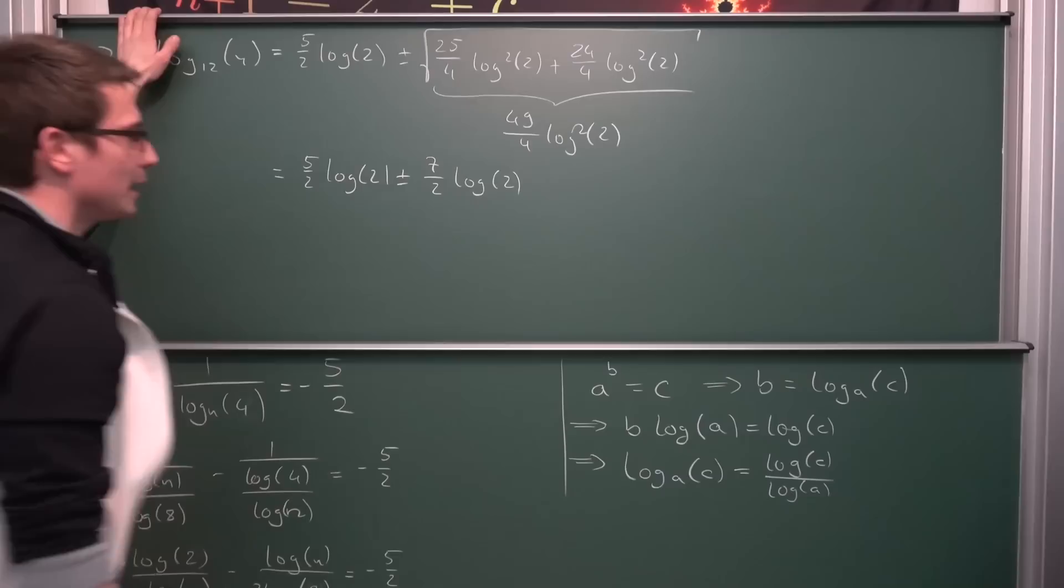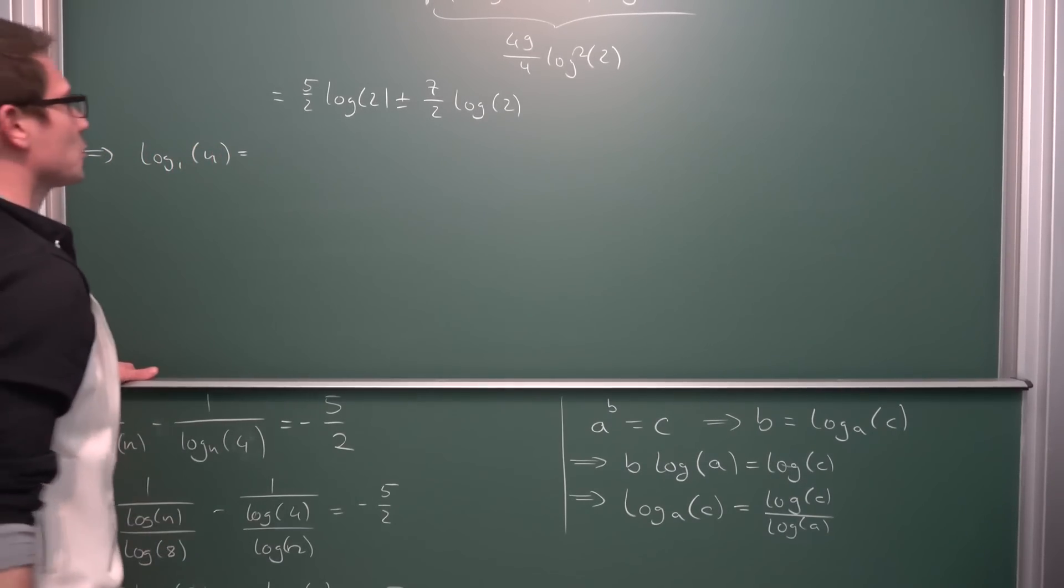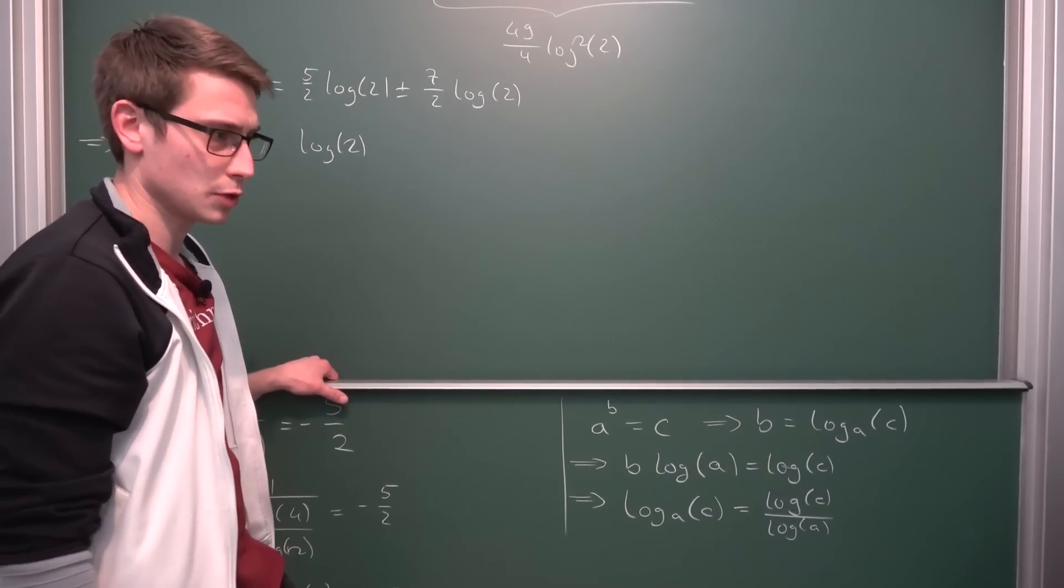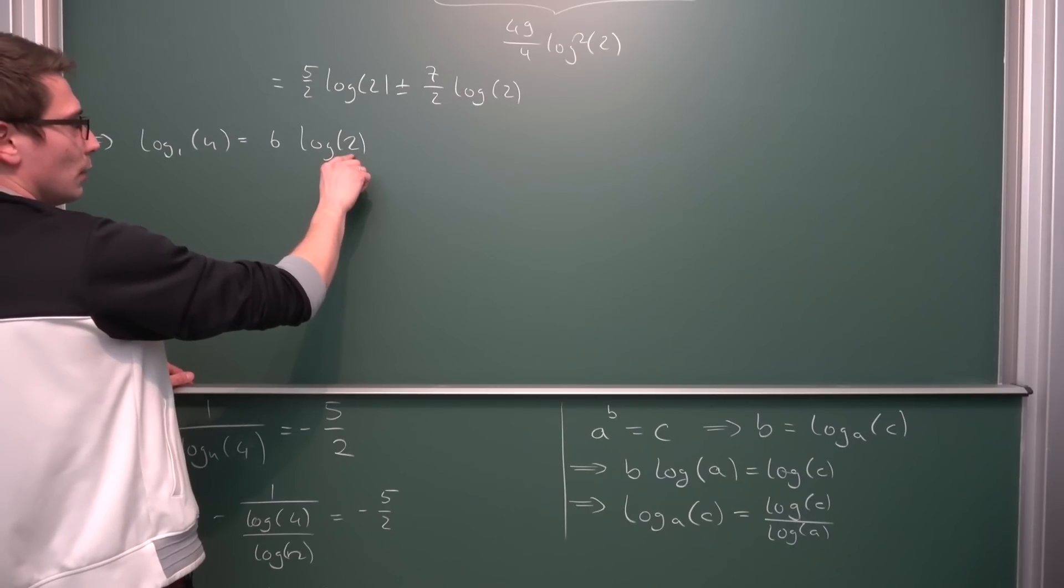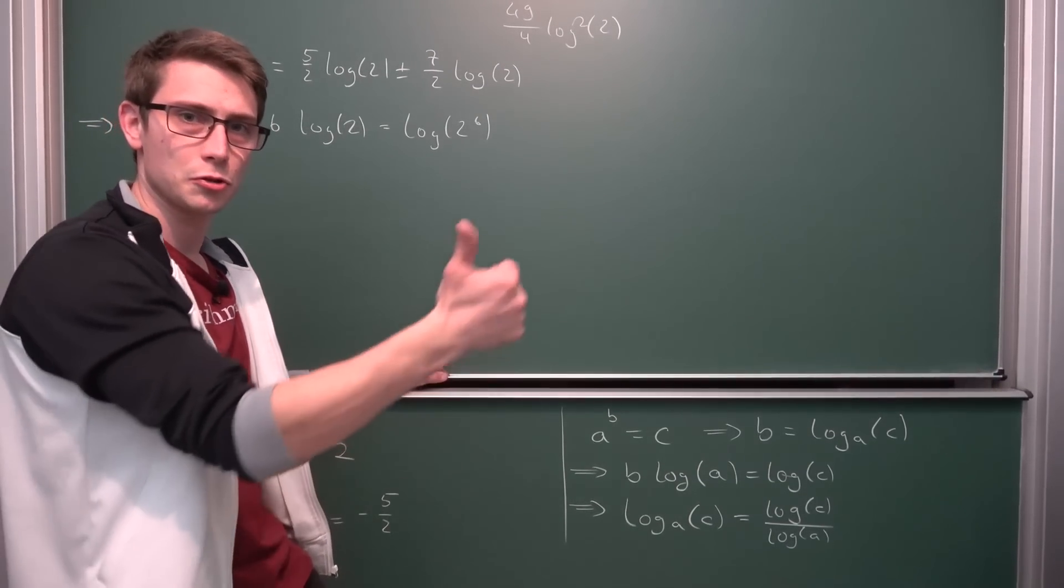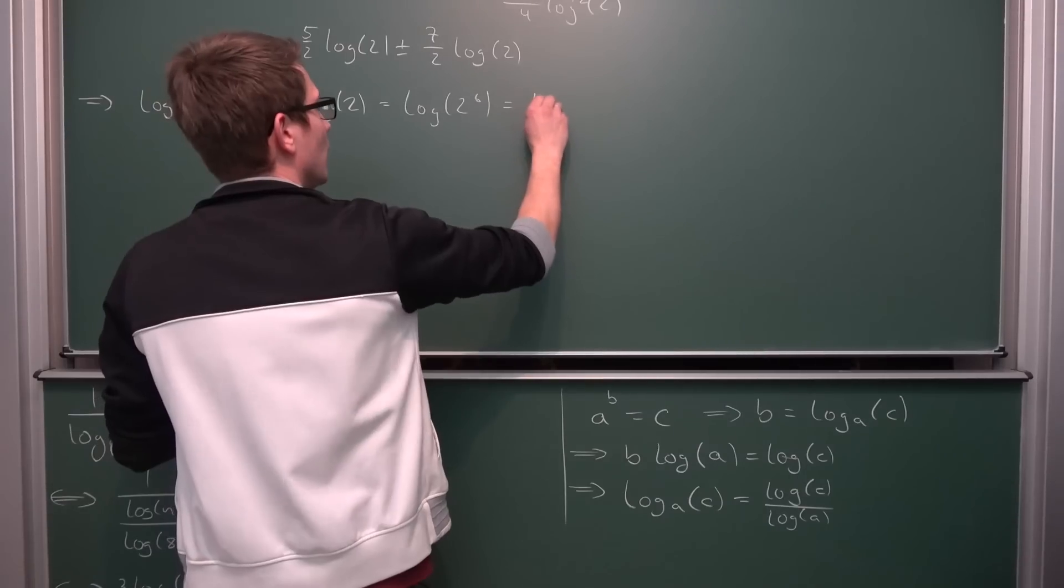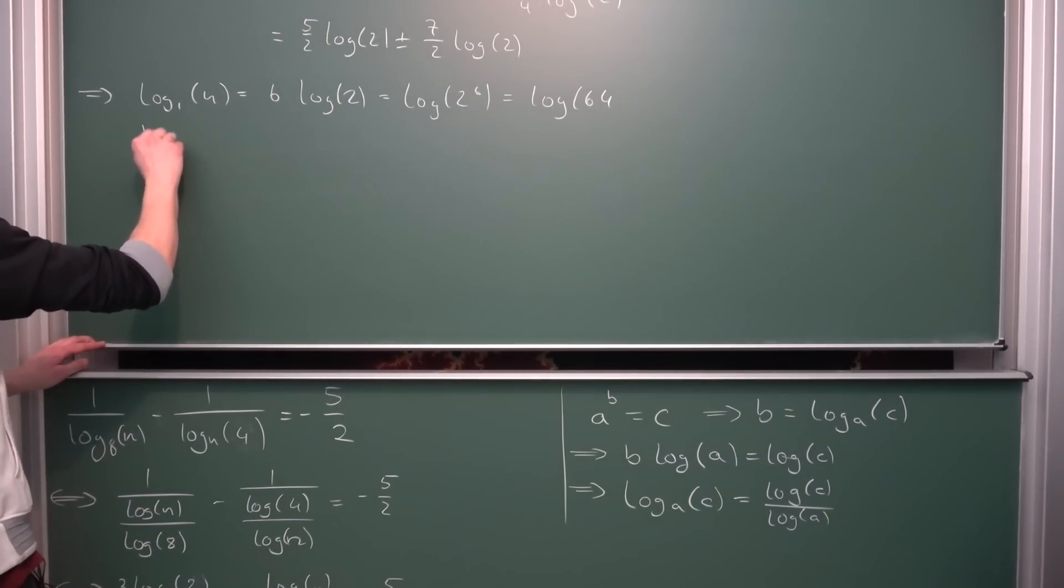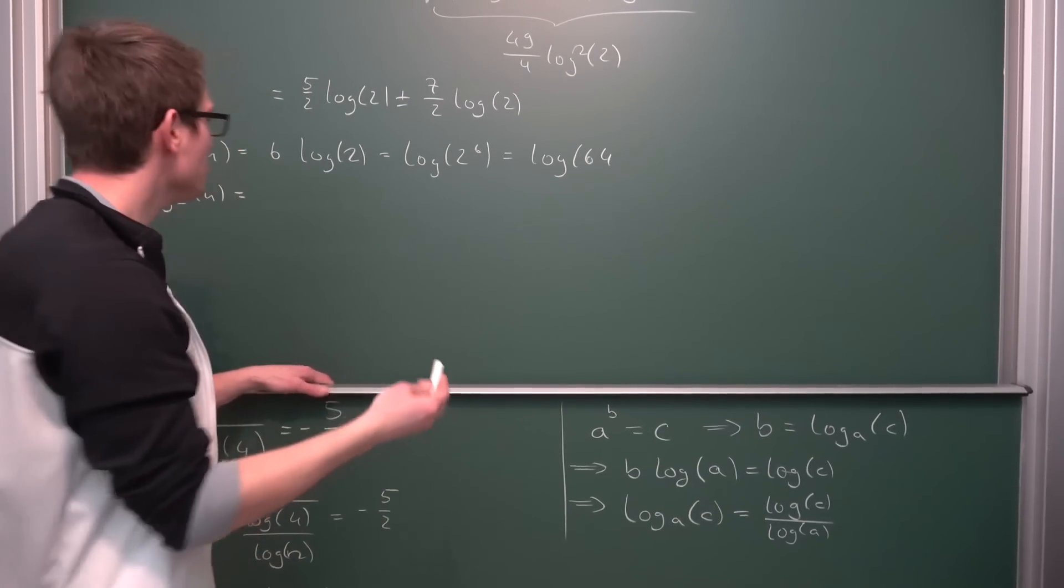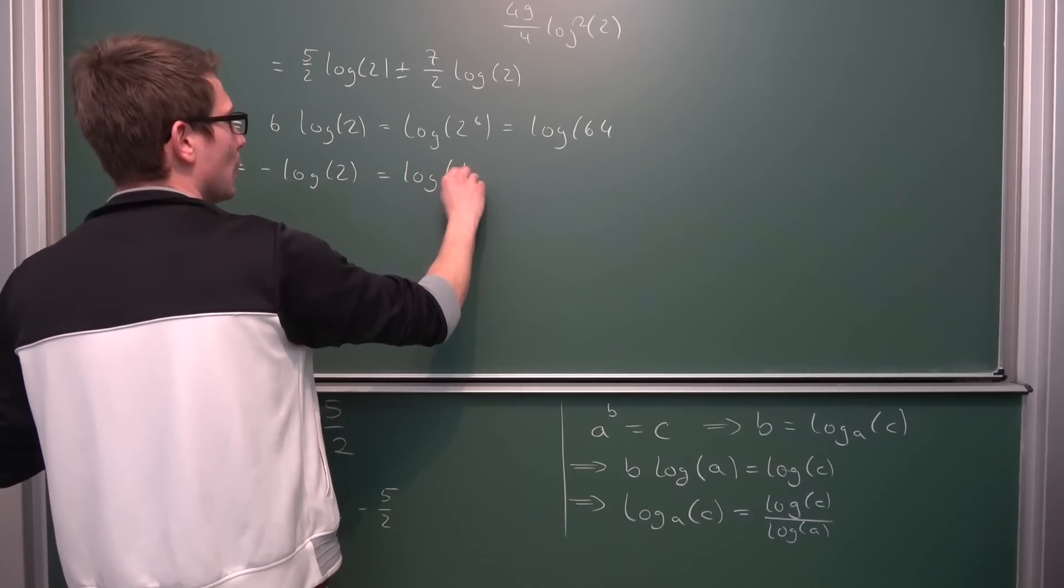Now we are going to get our two solutions that we were striving for. The first solution is going to give us 5 over 2 plus 7 over 2 is 12 over 2 which is 6, so 6 times log of 2. By using the logarithm property we can turn this into the logarithm of 2 to the sixth power. And 2 to the sixth power is 64, so log of 64. The other solution is going to give us 5 over 2 minus 7 over 2 which is negative 2 over 2, which is negative 1, so negative log of 2, meaning that's an exponent of negative 1 giving us log of 1 half.